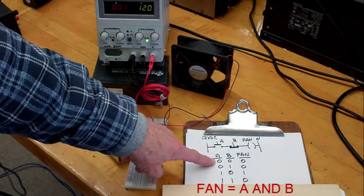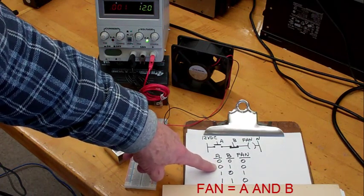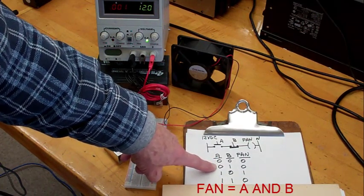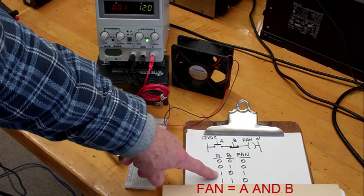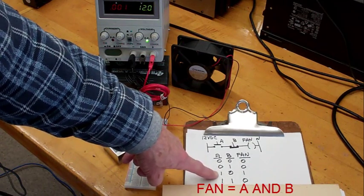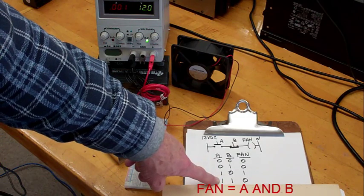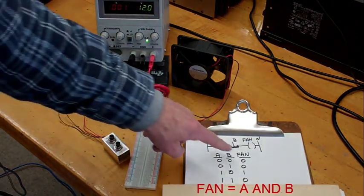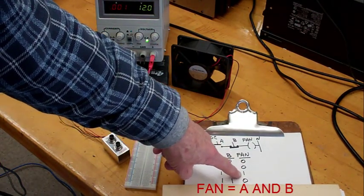Both switches are not pressed. B switch is pressed, but not A. A switch is pressed, but not B. Both switches are pressed, and the fan can be off or on.